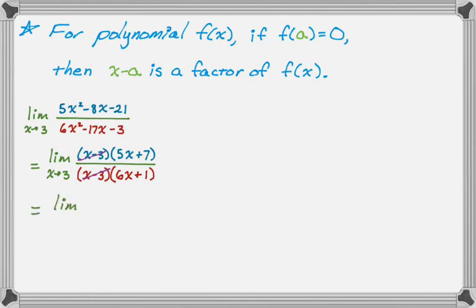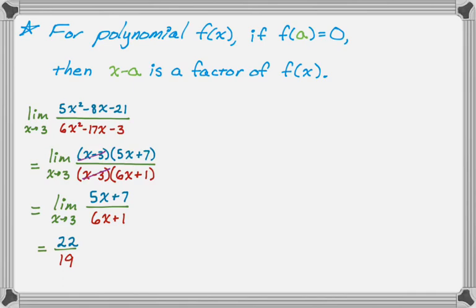I end up with the limit as x approaches 3 of 5x plus 7 over 6x plus 1. Now if I direct substitute, I get 22 over 19, which is a good result. So I used the fact that f of 3 equals 0 in both the numerator and denominator, which told me that x minus 3 had to be a factor of each.